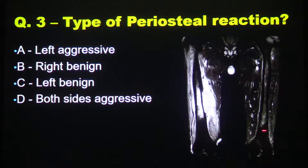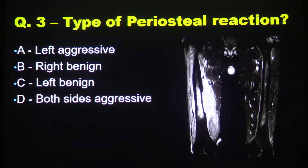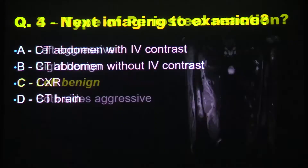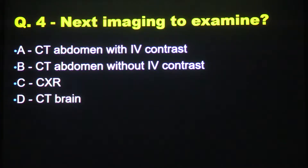So the periosteal reaction on the other side, the large lytic lesion with the soft tissue component, which we saw enhancing — this is the STIR. What we're talking about is a very wide periosteal reaction on the opposite side to a cortical lytic lesion with a soft tissue component. The periosteal reaction on the left side is benign and laminar. The idea for the next examination is actually part of the answer to the case.